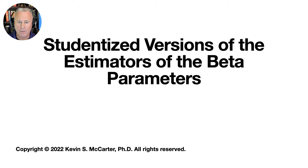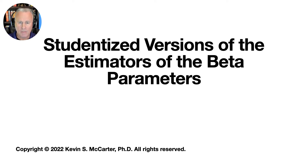However, because the expressions for the variances and standard errors of the least squares estimators involve the variance of the model error terms, when that quantity is unknown — which it will be in really all situations in practice — we cannot calculate the exact values of the standardized versions of these estimators. We then showed how we can estimate the variance of the model error term. This development led naturally to a two-sided f-test about the slope coefficient in the simple linear regression model. Using that estimator of the model error term, we then obtained estimators of the variances and standard errors of the beta parameters. Now that we have estimators of the variances and standard errors of the beta parameters, we can calculate what are called studentized versions of those estimators and determine their sampling distributions.